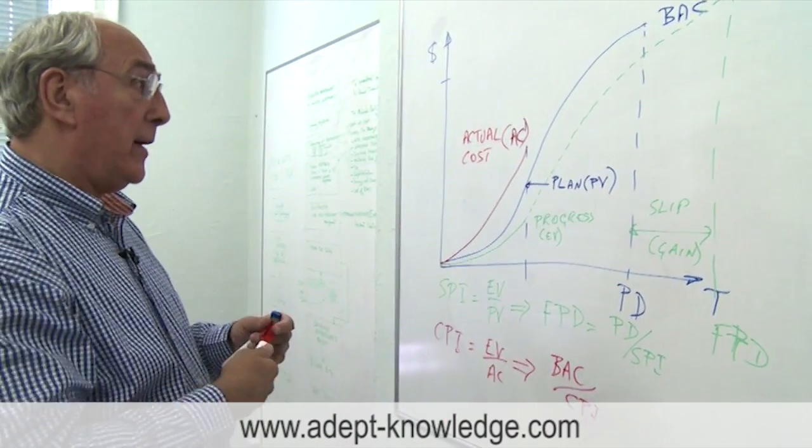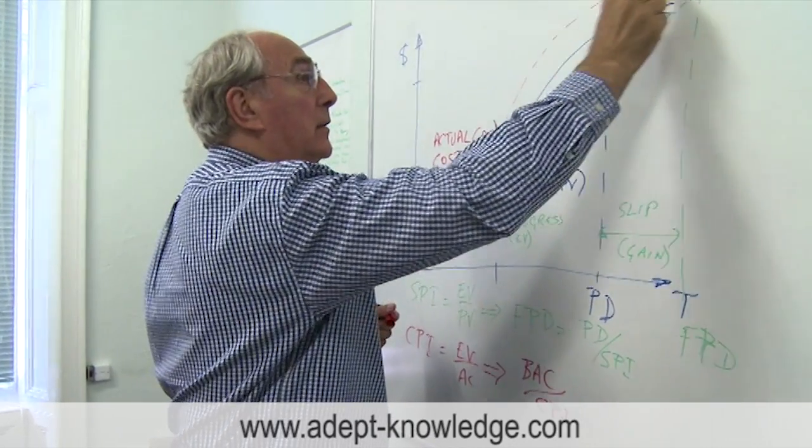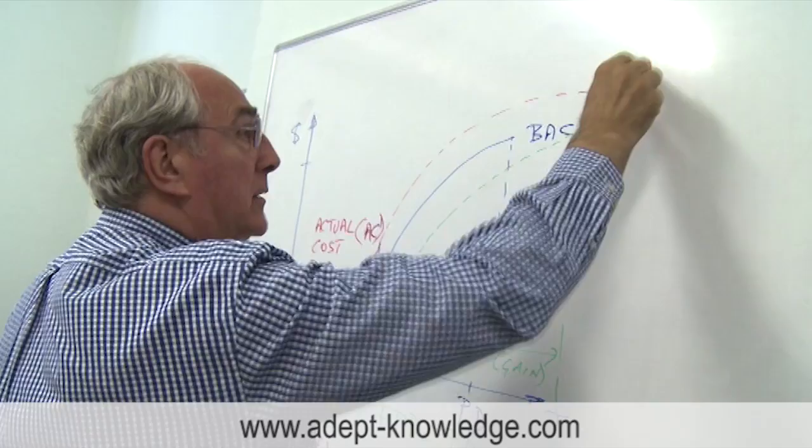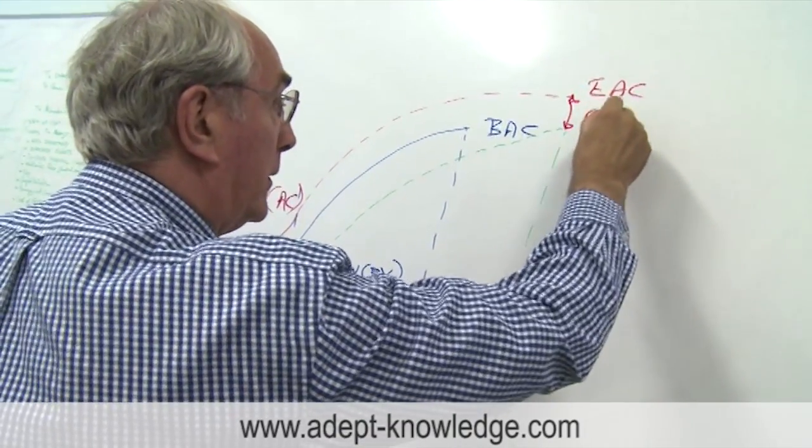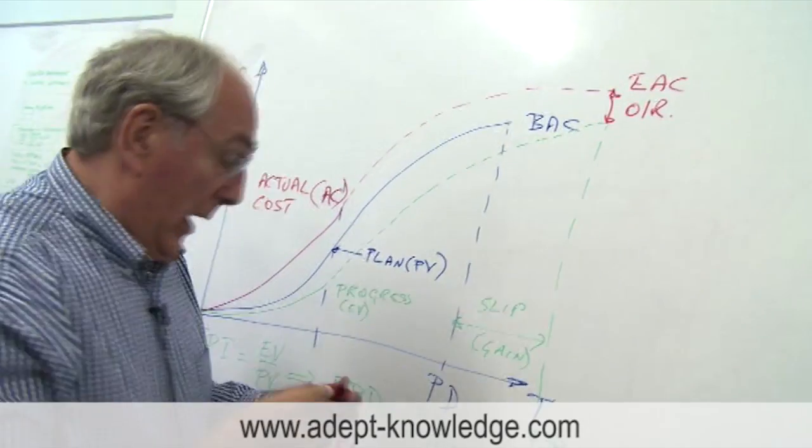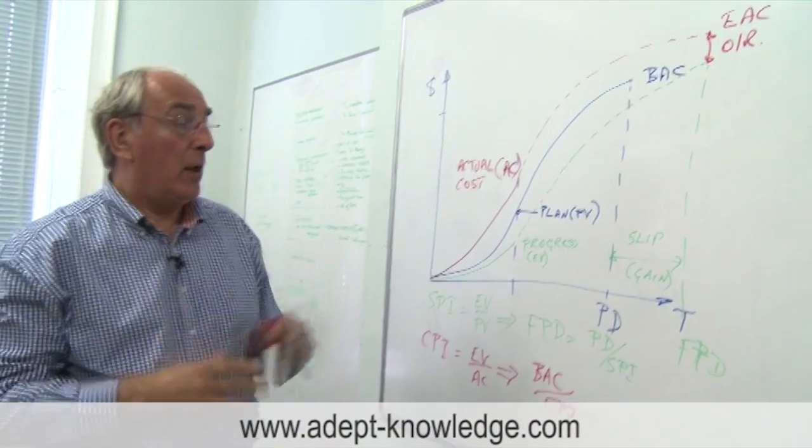And concomitantly with that, we have an estimate of where our costs are going to go and that follows a curve something like that. So we end up with an estimate at completion and this of course is our budget overrun. And that's really simply exactly what we need to find out about this project.